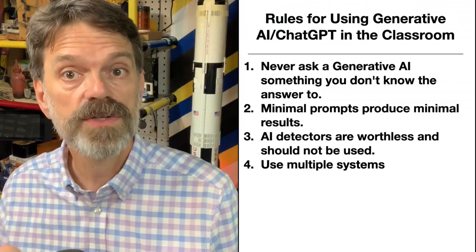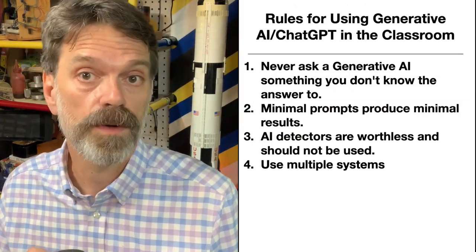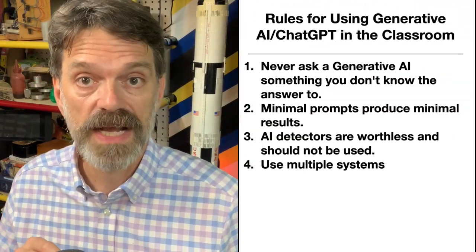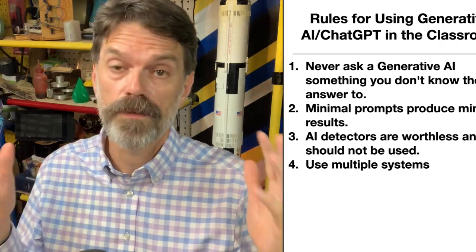Number four: use multiple systems — not just to identify outliers that might be hallucinations, but also to explore different approaches and responses. It's fine to have a preferred AI for a week or even a month, but things are changing so fast that you have to be constantly re-evaluating which is going to be the best tool for you and your work.